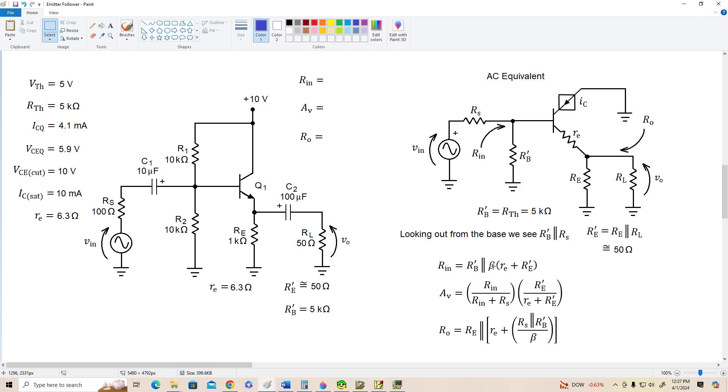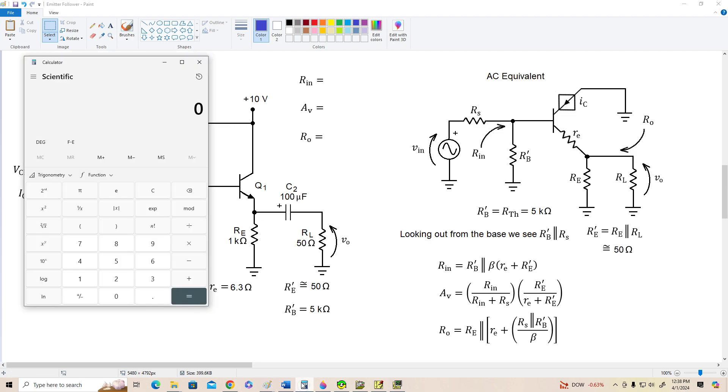And let's find R in now. R in is beta times little RE plus big R prime E. So 50 plus 6.3, 56.3 times 100 is 5,630 in parallel with 5,000.